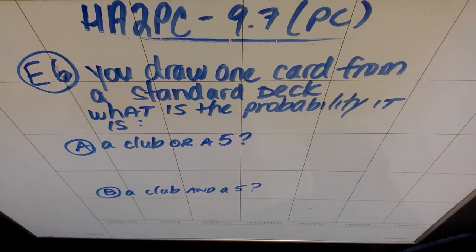This is Honors Algebra 2 Pre-Calculus. We're doing section 9.7 in pre-calc, which is probability. Example 6: You draw one card from a standard deck. What is the probability it is...